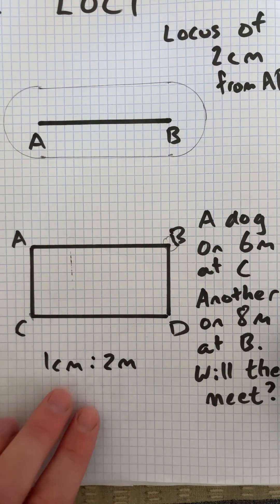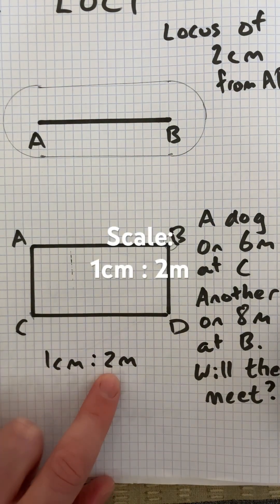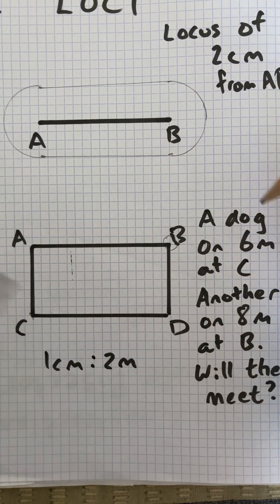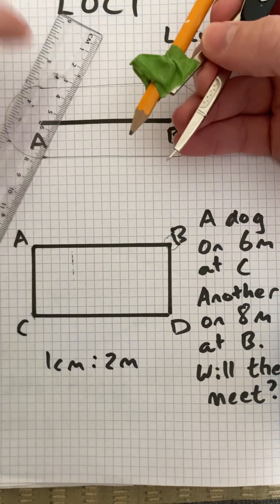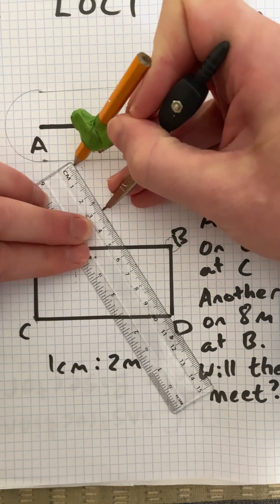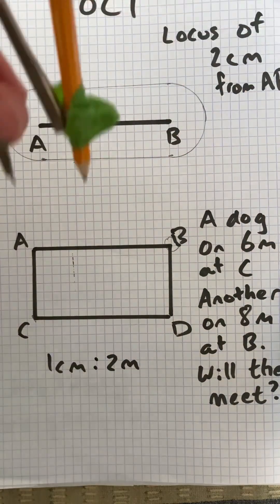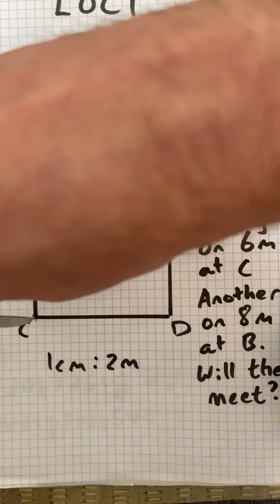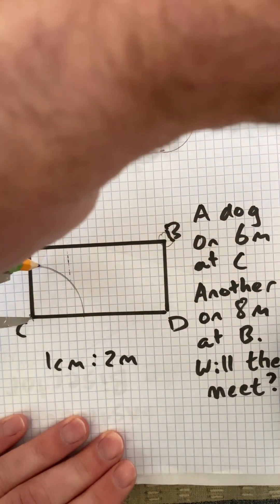We're using the scale that 1cm represents 2m. So for a 6m lead scaled, the compass is set at 3cm. The dog at point C has an arc that is 3cm.